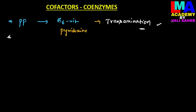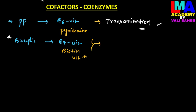Biocytin is a coenzyme derived from vitamin B-7, that is biotin, which is also known as vitamin H. The function of biocytin is the transfer of carbon dioxide or a carbon group from one substrate molecule to another — it is particularly involved in carboxylation reactions.